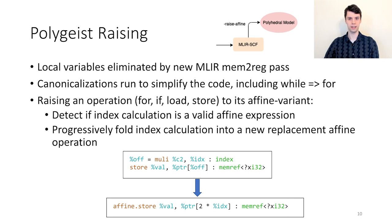As we saw in our earlier example, directly lowered constructs are not yet valid polyhedral programs. Polygeist begins by running a new mem-to-reg pass to eliminate local variables. Additional optimizations or canonicalizations are also applied to simplify the code, including a transformation which attempts to raise and simplify while loops into for loops with known bounds.